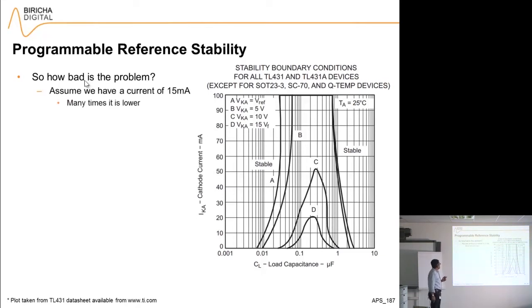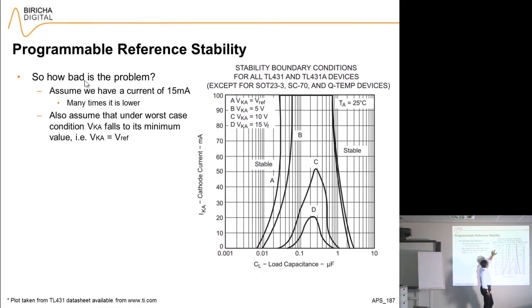Assume for now that we've got a current of 15 milliamps so it fits with the plot. Also assume that under worst-case conditions, the cathode anode voltage across the programmable reference falls to its minimum, so VKA equals Vref, and that gives us curve A to look at.